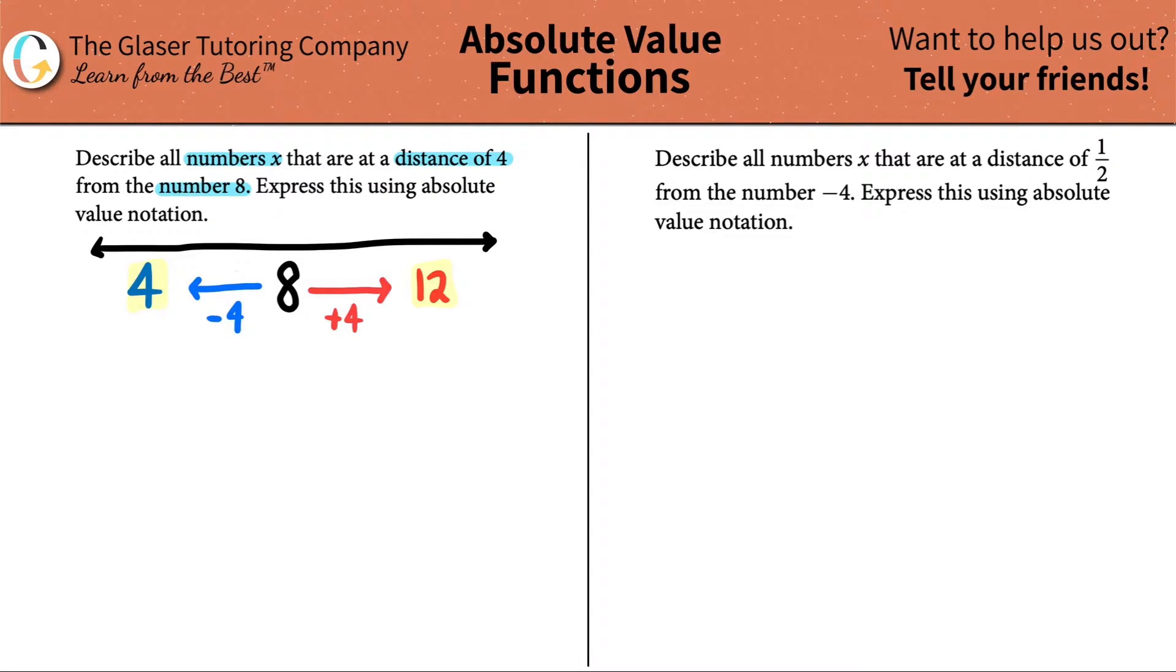The hard thing is that we have to express this using something called absolute value notation. So absolute value notation is when you start seeing these straight lines in between something that's trapped, technically, or usually, it's going to be an x value. And it's always going to equal some number, whether it's two or three or four, but absolute value notation has to have these lines.